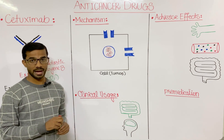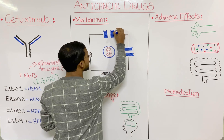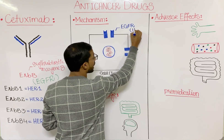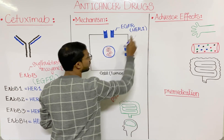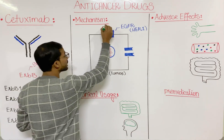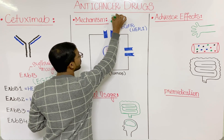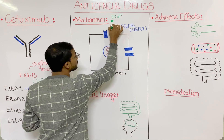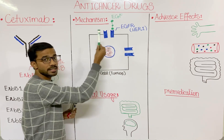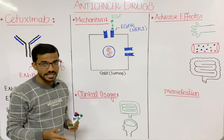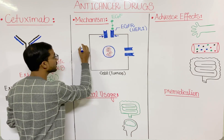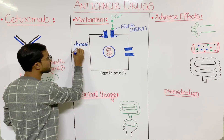Here is the epidermal growth factor receptor, HER1, expressed on the tumor cell. When the ligand — that is, the epidermal growth factor — binds to this receptor, then you will see dimerization: both receptors combine together. This is called dimerization of the epidermal growth factor receptor.